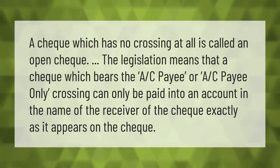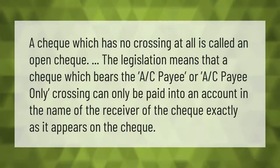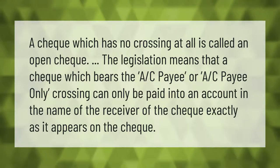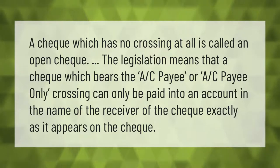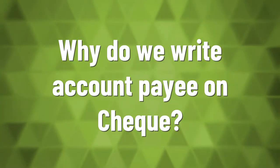A check which has no crossing at all is called an open check. The legislation means that a check which bears the 'A/C payee' or 'A/C payee only' crossing can only be paid into an account in the name of the payee.